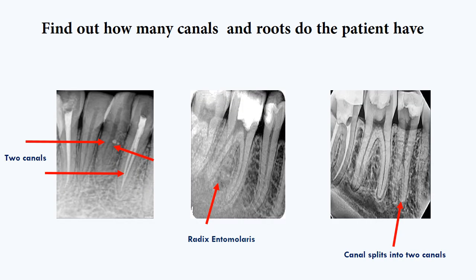The next reason why we should take an X-ray is to determine how many canals and roots the patient has. As you can see, there is an incisor, and if you look carefully you'll see that this incisor has two canals. Many dentists underestimate incisors and think they have only one canal, and they treat them without making an X-ray — which will of course lead to endodontic failure.